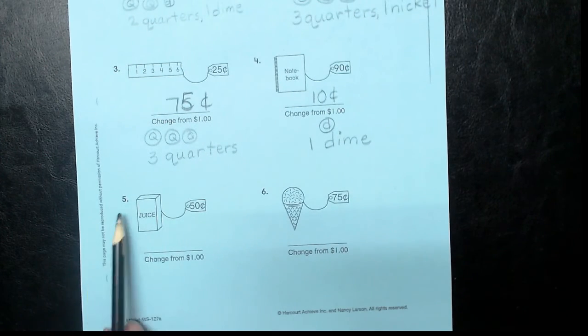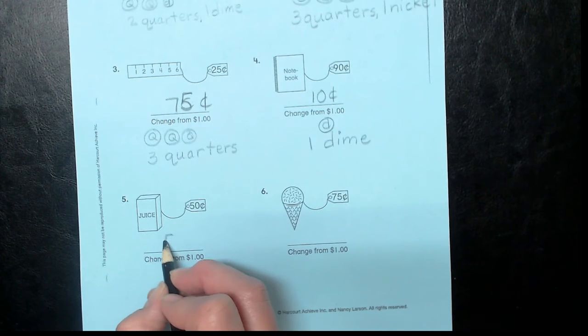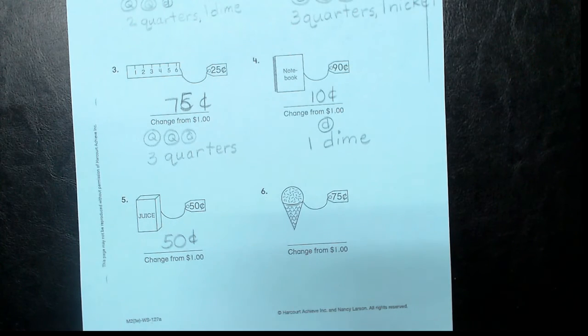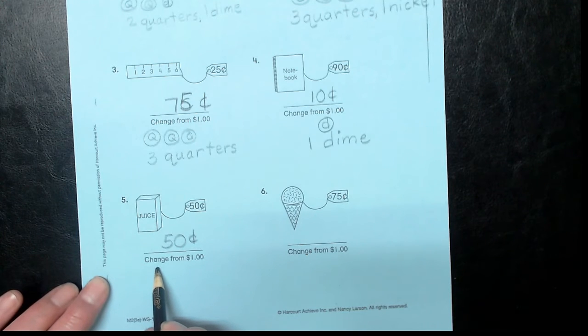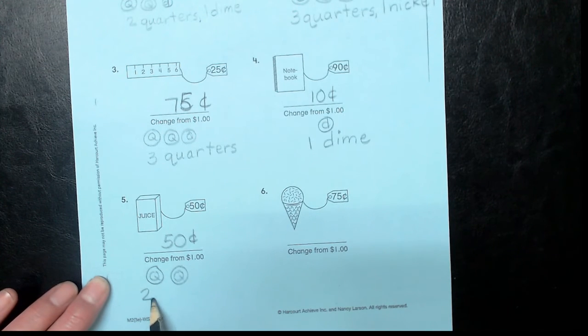All right, so you bought a juice box. It costs 50 cents. You paid for it with a dollar. What will you get back? You got it. You'll get 50 cents back. 50 cents and 50 cents makes a dollar. What coins will you get back? You got it. Two quarters will make 50 cents, so we'll get two quarters.